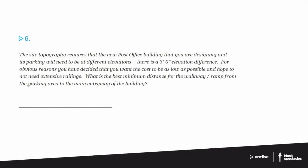Okay, number six. The site topography requires that the new post office building that you are designing and its parking lot will need to be at different elevations. There is a three-foot elevation difference. For obvious reasons you have decided that you want the cost to be as low as possible and hope to not need extensive railings. What is the best minimum distance for the walkway/ramp from the parking area to the main entryway of the building?